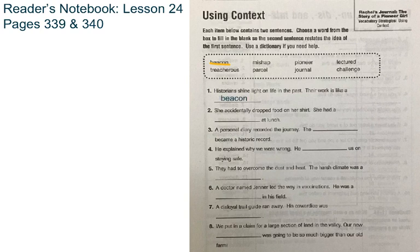Number two: She accidentally dropped food on her shirt. She had a blank at lunch. We have the word mishap, which means an unlucky accident. The key word in our first sentence is accidentally, so we now know that she had a mishap at lunch.